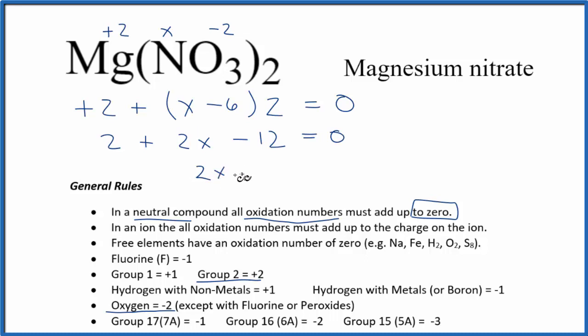So 2X is going to equal, we'll have -10, so that's +10 on the other side. Then X, dividing both sides by 2, is 5. It's a positive 5.